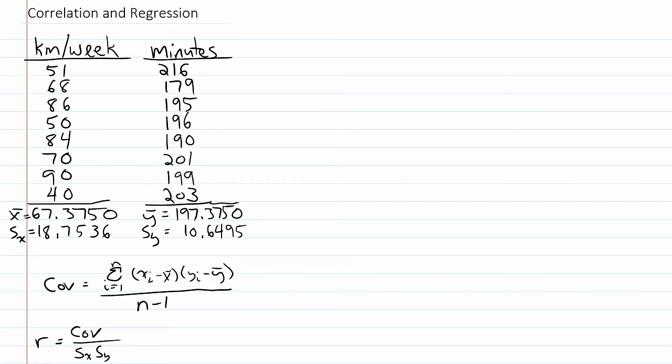For example, if I want to compute deviation scores for x, which is the kilometers per week, I need to take each value and subtract it by the mean number of kilometers per week. What I get in this first row is going to be 51 minus 67.375, and that's going to be negative 16.375.